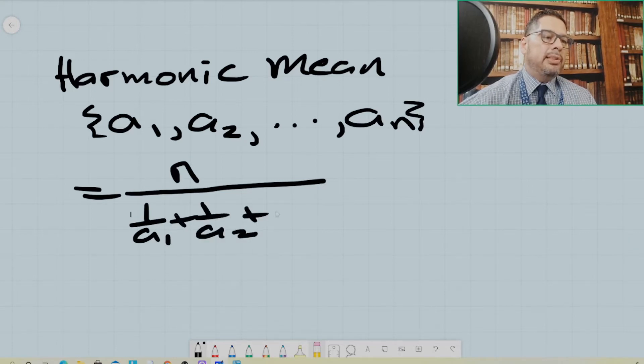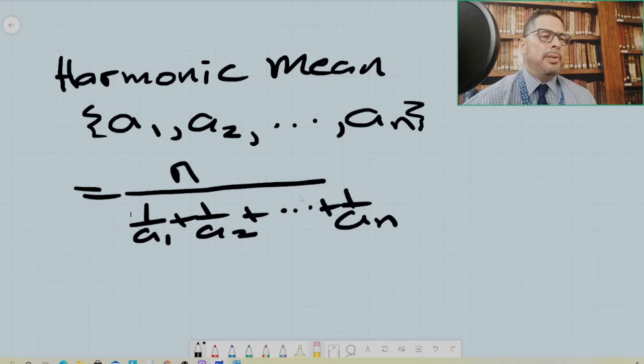And so in this manner, the harmonic mean is defined. And this pops up on average speed problems. So what I'm going to do now that I've defined the harmonic mean, I'm going to show you in theory how this pops up.